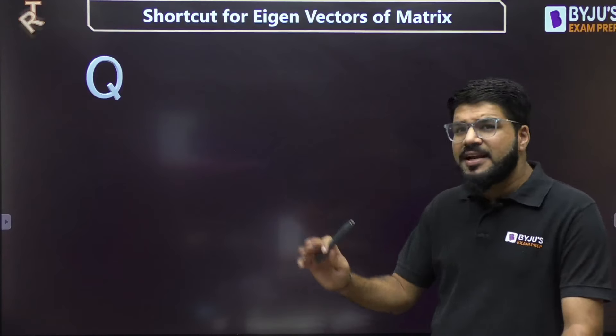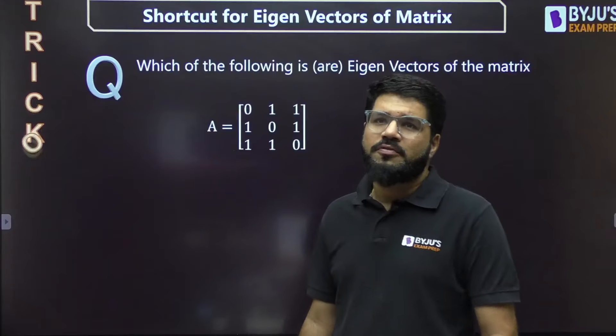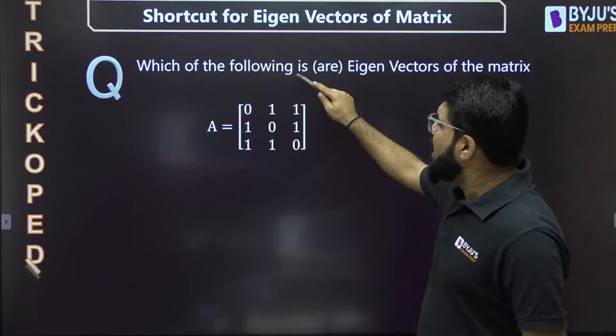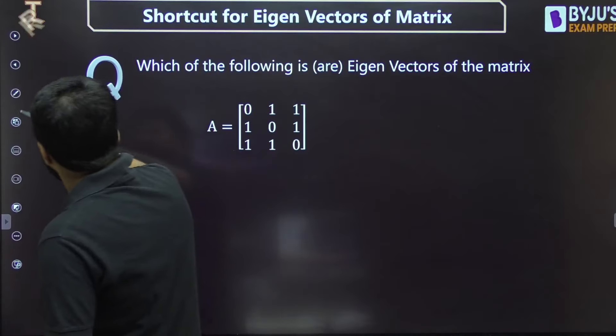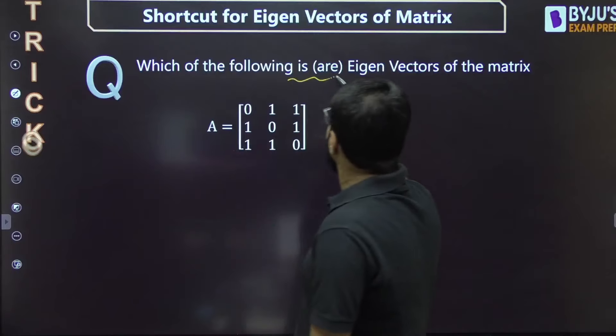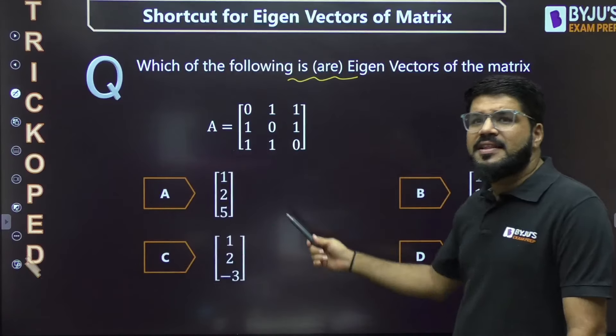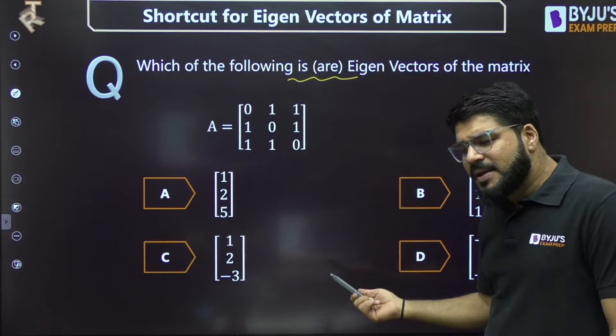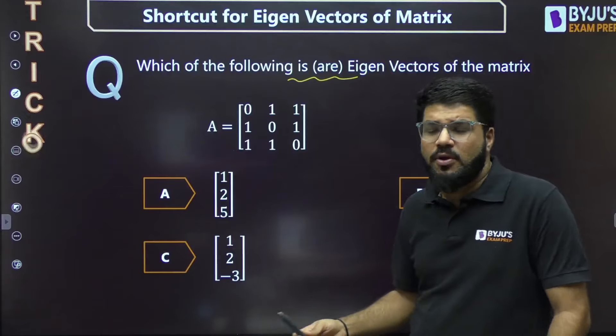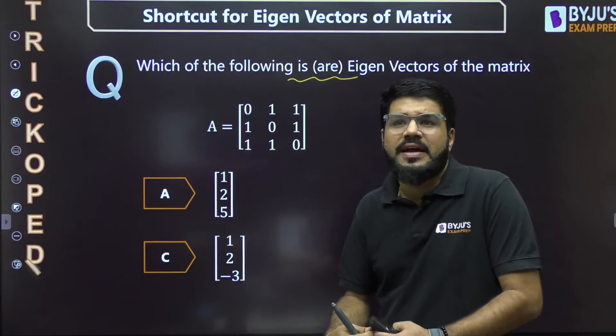Let's start directly with a question. Which of the following is or are the eigenvectors? I'm converting it as a multiple select question with four options. The conventional method requires detailed equation solving, but at the end we should know what eigenvectors are, right?